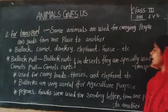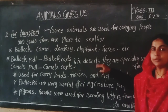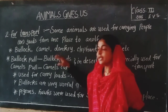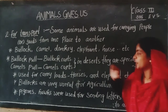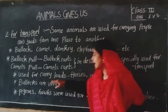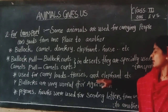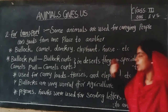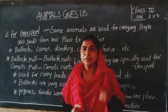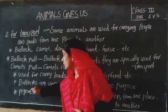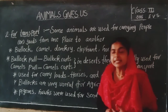In deserts, camels are specially used for transport. Bullock carts and camel carts are used for carrying loads. Horses and elephants are also used for carrying loads. Bullocks can be used for ploughing in the field. Bullocks are very useful for agricultural purposes.